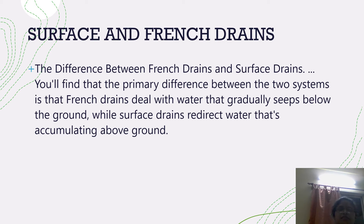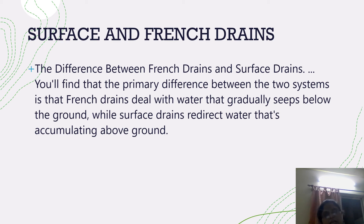The main surface and fringe drainage systems differ primarily in two ways: the French drain deals with water that gradually sits below the ground, while surface drainage redirects water accumulating above the ground. The fringe drainage system takes underground water below the surface, whereas the surface drainage system manages water flowing above the surface which we can see.